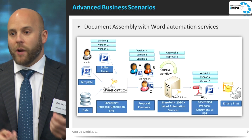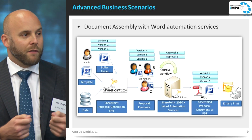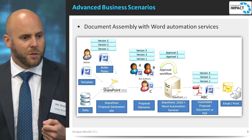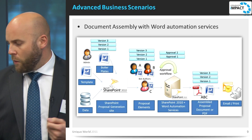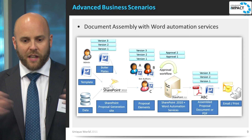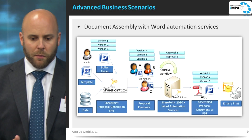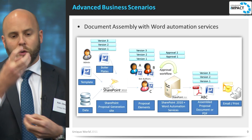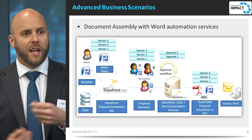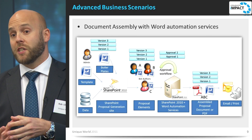SharePoint helps you to an extent there because you've got version control and some collaboration capabilities. But one of the interesting things you can do with automation services is use that assembly capability to break down a document into a number of constituent parts, each with workflow and versioning, and then assemble it at the end of the process when you're ready.